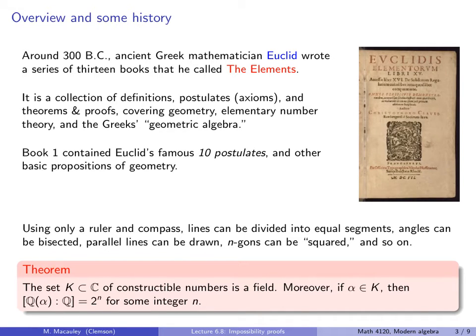And here is the short version of that theorem. First it says that the set, henceforth k, of constructible numbers is a field. And if alpha is a constructible number, meaning we can construct it using a ruler and a compass from a line segment of length 1, then the degree of the extension of q adjoin alpha over q is some power of 2. So we will use this to prove the impossibility of the three basic constructions that stumped mankind for over 2,000 years.